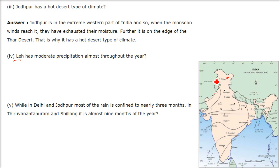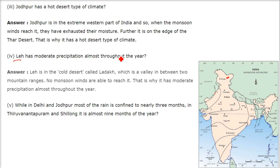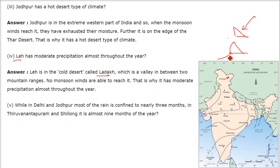Leh has moderate precipitation almost throughout the year — it is a cold desert. Leh lies in the cold desert called Ladakh, which is a valley in between two mountain ranges. No monsoon winds are able to reach it — whether from one side or the other, the mountains block them. That is why Leh has moderate precipitation almost throughout the year.